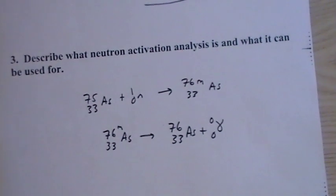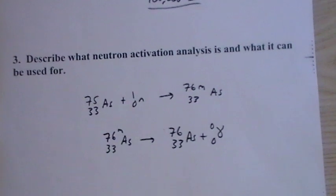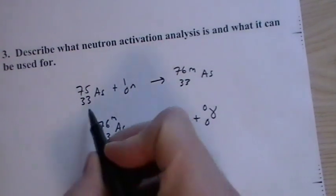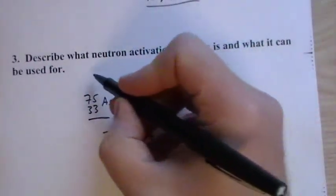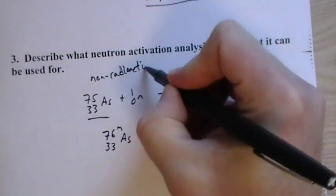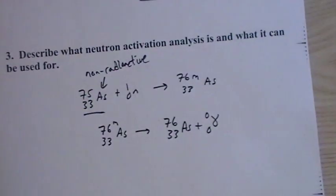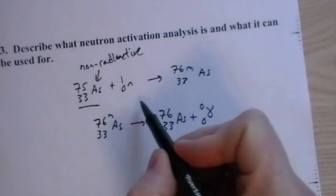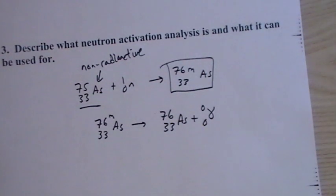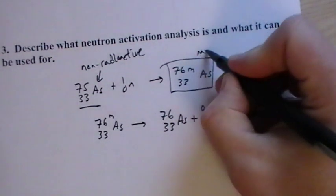Okay, describe what neutron activation analysis is and what it can be used for. Now, if you take something that is non-radioactive and you slam it with a very high-energy neutron, you can create an unstable or metastable element.